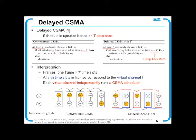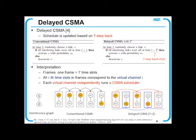All i-th time slots in frames are regarded as virtual channel i. Each virtual channel independently runs a CSMA schedule. In this example, odd time slots correspond to the red virtual channel and even time slots correspond to the blue virtual channel. Red schedule and blue schedule take turns to be executed. Thus, the transition from an on-off state to an off-off state can now be possible.